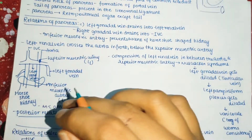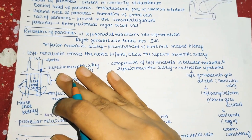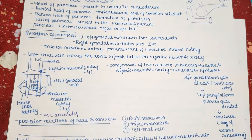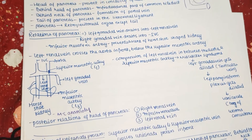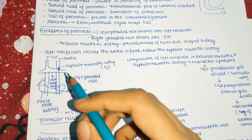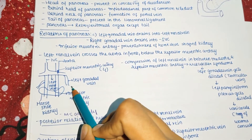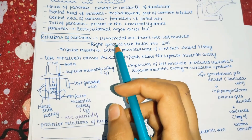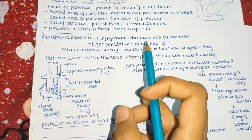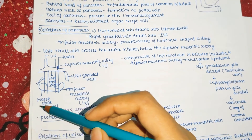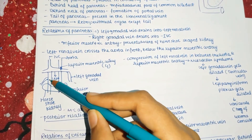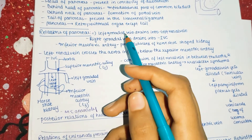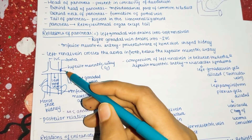Coming to relations of the pancreas: the left gonadal vein drains into the left renal vein, whereas the right gonadal vein drains directly into the inferior vena cava.